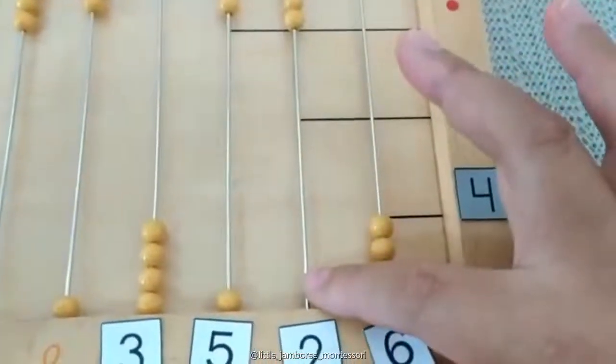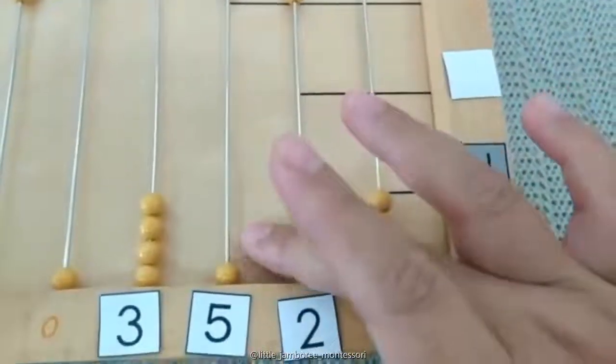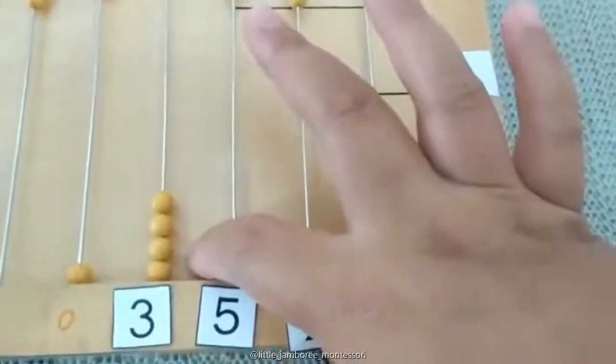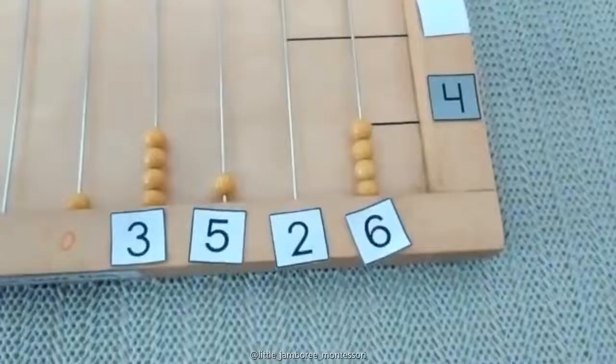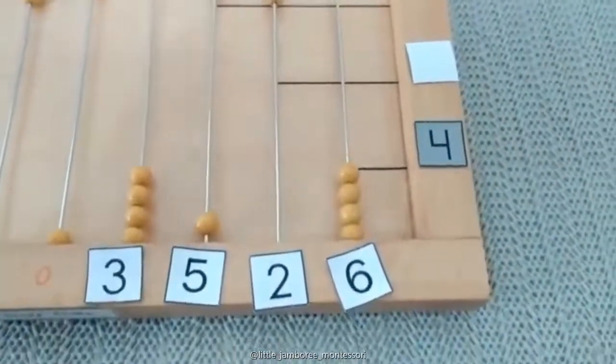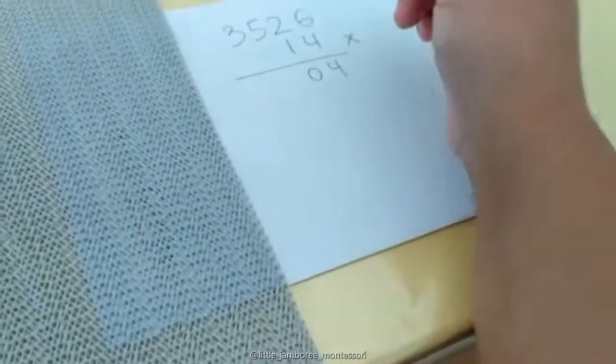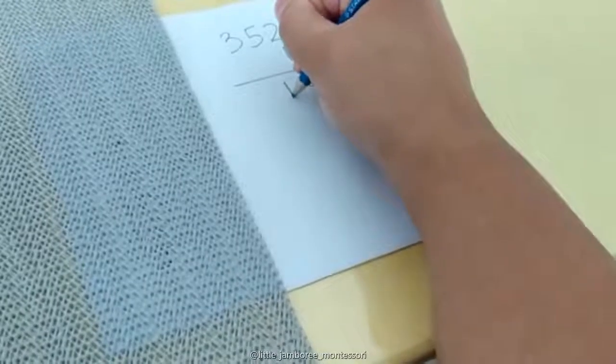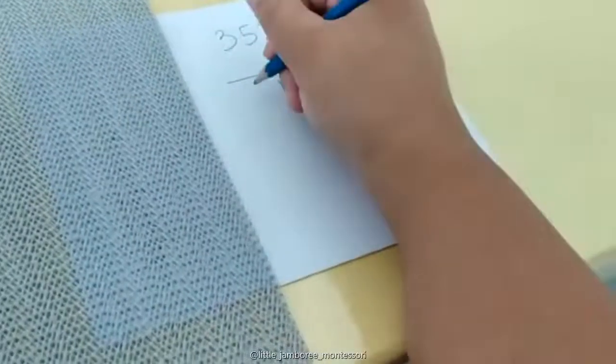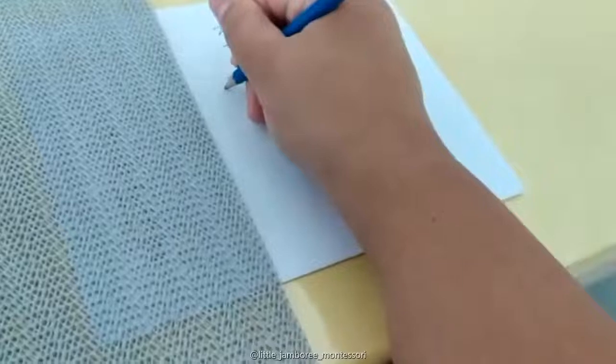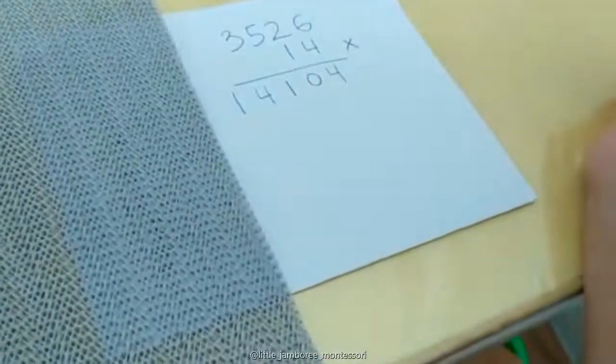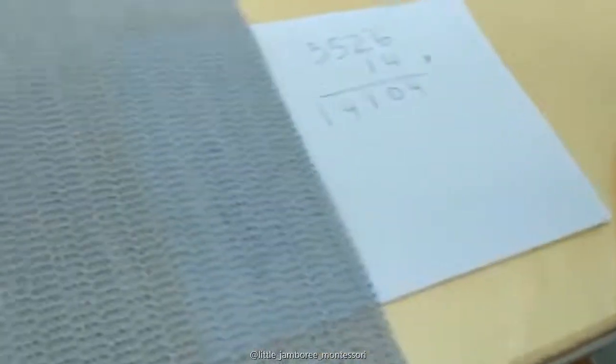Four units, zero tens, one hundred, four thousand, and one ten thousand. Okay, so it's 14,104. That's the first process.